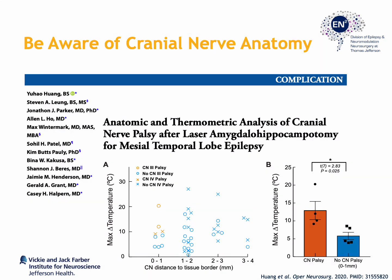When the cranial nerve passed within one millimeter of the mesial structures, there was a significantly higher chance of cranial nerve palsies, particularly when temperatures increased by more than seven to eight degrees Celsius. So it's very important to understand the relationship of the cranial nerve to the mesial structures. If the cranial nerve is more than one millimeter away, temperatures can be allowed to increase without significant concern. But if it lies within one millimeter, the surgeon should try to maintain temperatures below 45 degrees centigrade, which is an approximately seven degree increase in overall temperature.